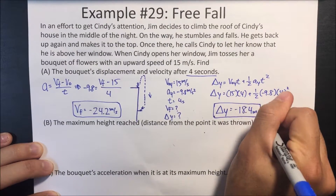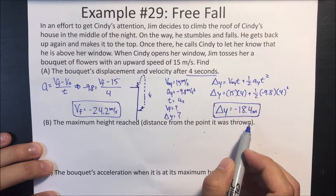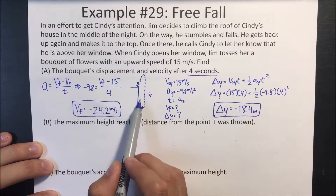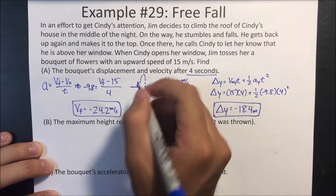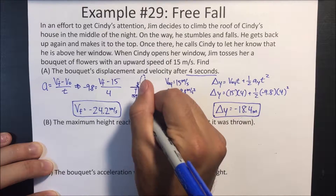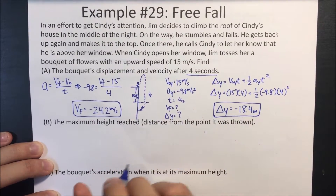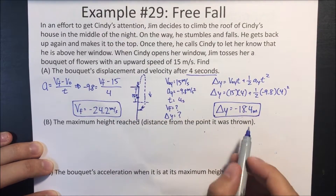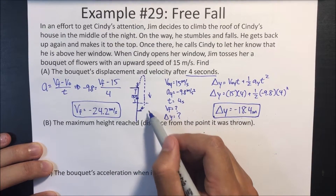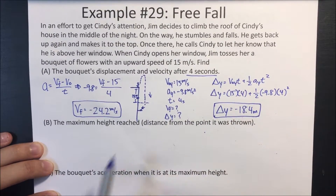So negative 18.4 meters means this is where it started, and it's 18.4 meters below where it started. At this point, it's negative 18.4 meters and it's going 24.2 meters per second in the downward direction.